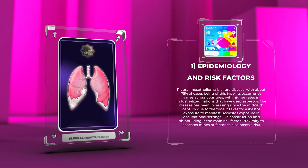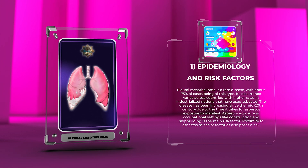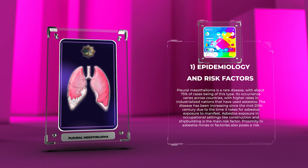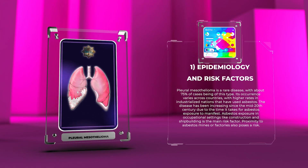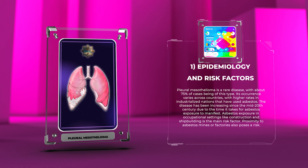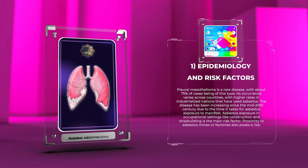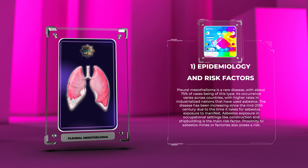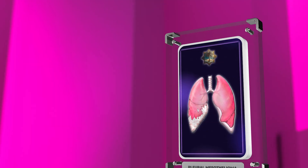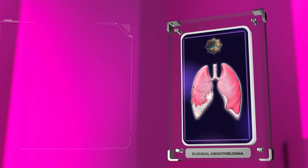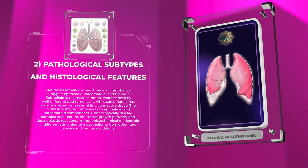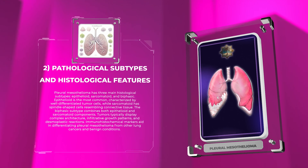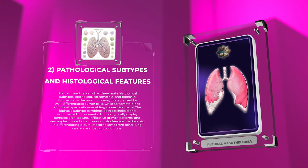The disease has been increasing since the mid-20th century due to the time it takes for asbestos exposure to manifest. Asbestos exposure in occupational settings like construction and shipbuilding is the main risk factor. Proximity to asbestos mines or factories also poses a risk. Pleural mesothelioma has three main histological subtypes: epithelioid, sarcomatoid, and biphasic.